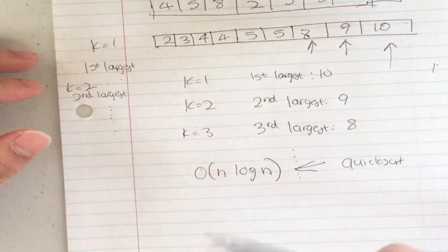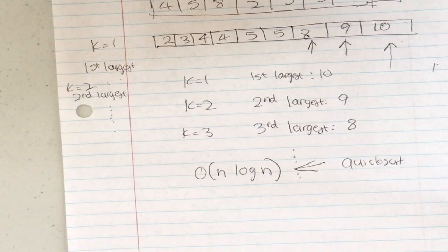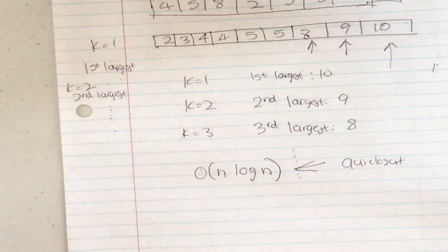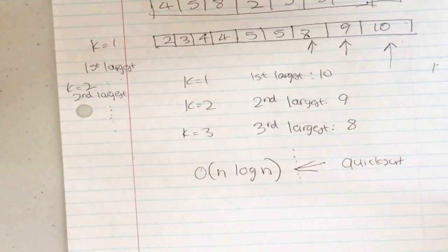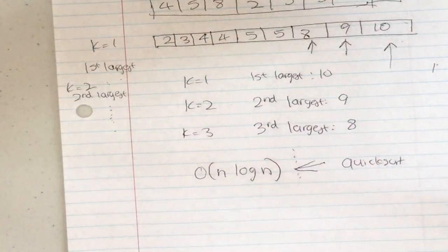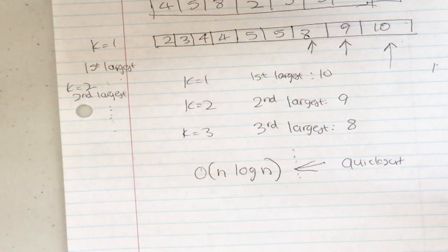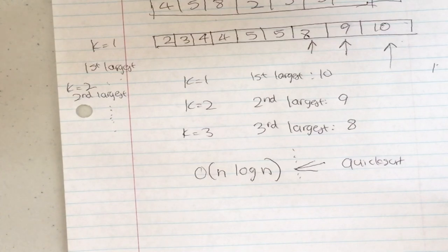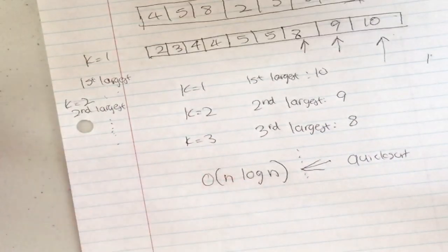A better way is to use something called a heap. A heap is essentially a sorted array where you only have access to the first value. With a min heap, the smallest value is first; with a max heap, the largest value is first.